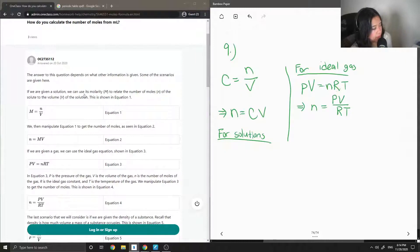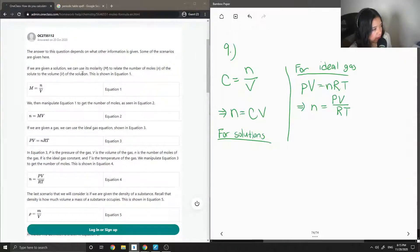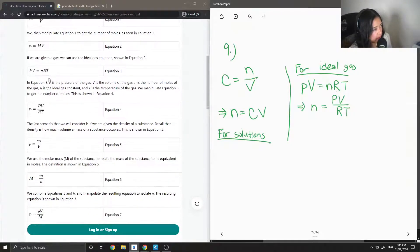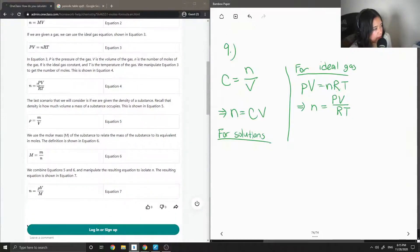To answer, it just depends on what information is given. If you're given a solution, we can use its molarity - so I said concentration but molarity is the same thing - to relate the number of moles of the solute to the volume of the solution. Number of moles is equal to concentration times volume. And they also have the ideal gas equation as well. Number of moles is equal to PV over RT.